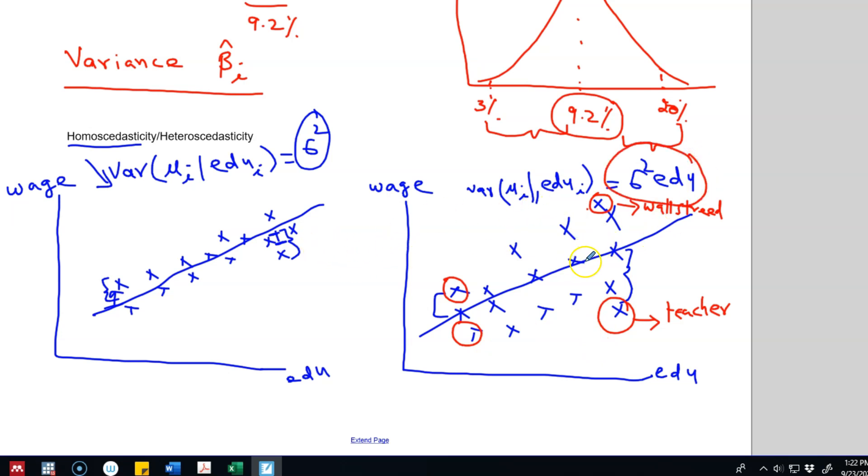So OLS estimates assume that the variance should be constant, but if the variance is not constant, we will have this heteroscedasticity in the model. So notice here that the average effect of education on wages is still unbiased, but it is the variance which is biased.